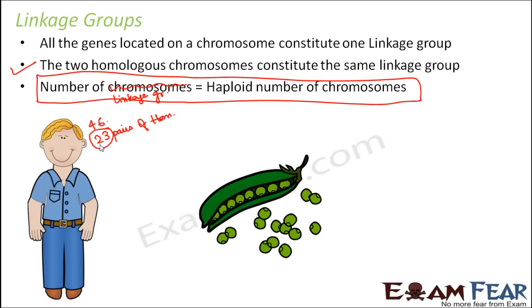Similarly, if you take the example of the pea plant, how many chromosomes do they have? They have a total of 14 chromosomes, which gives seven pairs — so they have seven linkage groups.